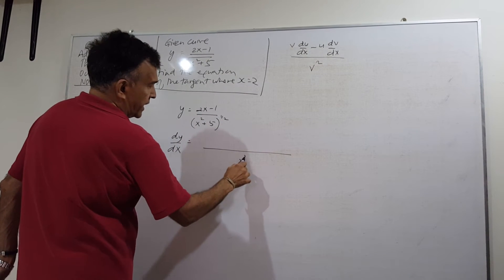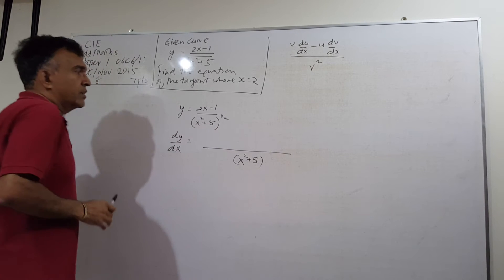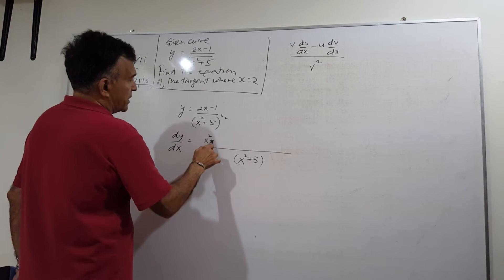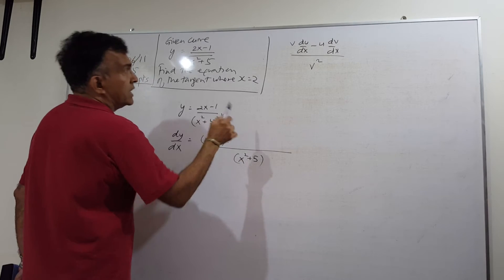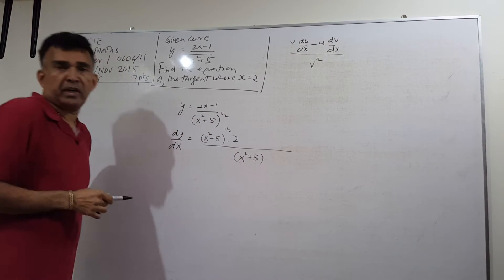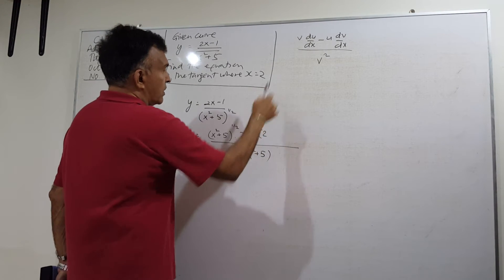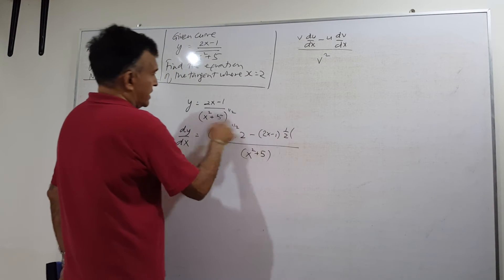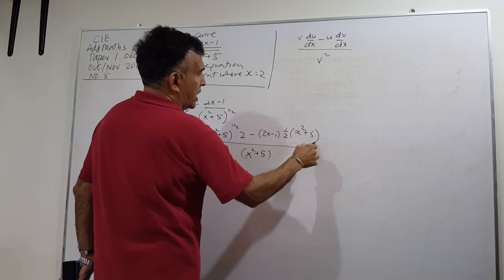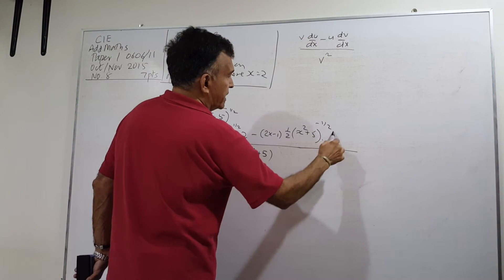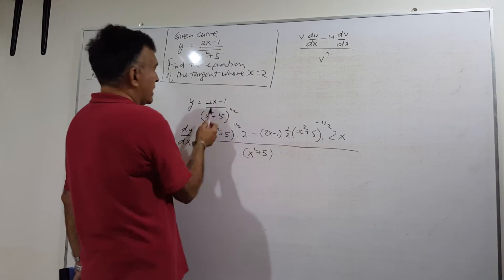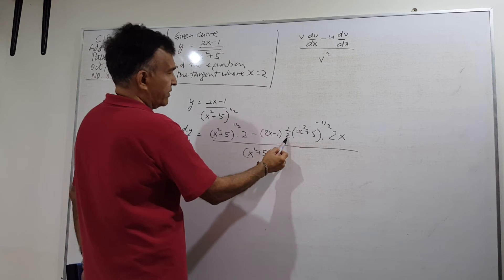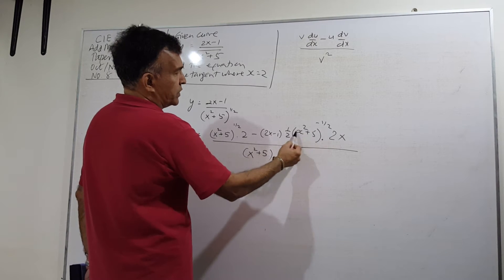So v squared will be (x squared plus 5). Now let's fill out the numerator. Write down v, which is (x squared plus 5) raised to the power of 1/2, then differentiate u — you get 2, since differentiating (2x minus 1) gives 2 — minus u times the derivative of v. Bring the power down as a half, reduce the power by 1, and differentiate inside.